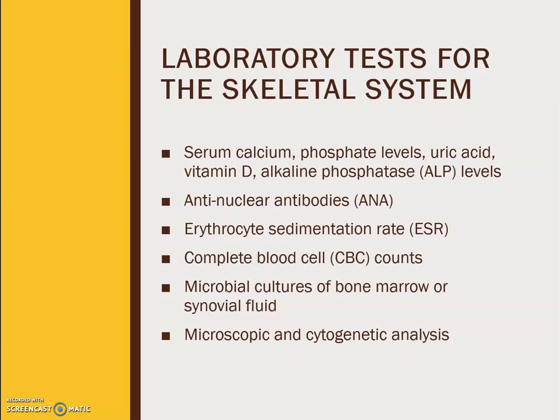Laboratory tests for the skeletal system include serum calcium, phosphate levels, uric acid, vitamin D, ALP levels, antinuclear antibodies, erythrocyte sedimentation rates, complete blood count, microbiological cultures or bone marrow, and microscopic or cytological analysis. This concludes Chapter 6, Part 1. Please view Chapter 6, Part 2 to continue with this lecture PowerPoint narration.